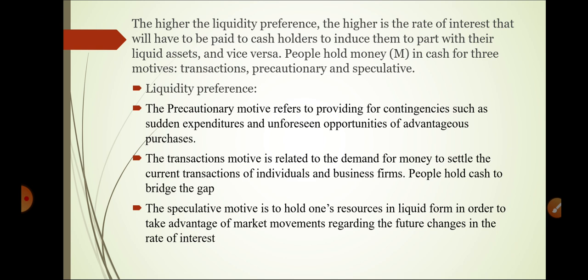The three motives of liquidity preference are: precautionary motive — we save money to provide for contingencies and uncertainty in the future; and transaction motive — we use money for transaction purposes with individuals or other businesses.